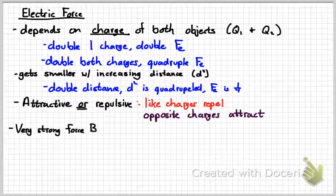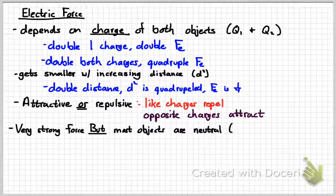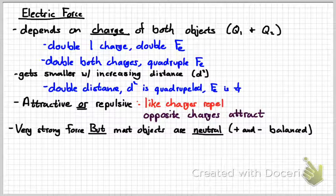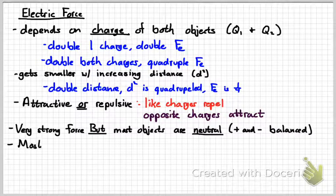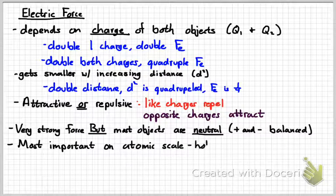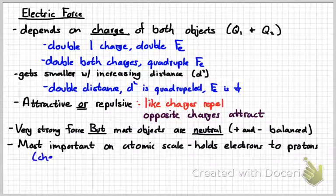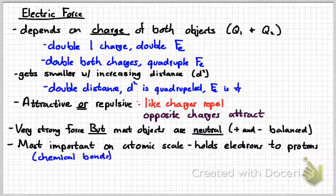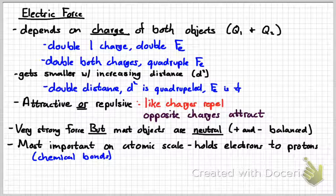The electric force is very strong. But most objects that we deal with are neutral overall. That doesn't mean they don't have any charge. It means the positives and negatives are balanced. The electric force is most important on the small scale, like the atomic scale. Protons and electrons attracting each other is what causes chemical bonds. That's why the electrons stay in the atom.